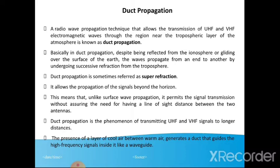Basically, in duct propagation, despite being reflected from the ionosphere or gliding over the surface of the earth, the waves propagate from one end to another by undergoing successive refraction from the troposphere. Duct propagation is sometimes referred to as superrefraction. It allows the propagation of signals beyond the horizon, meaning that unlike surface wave propagation, it permits signal transmission without the need for a line-of-sight distance between the two antennas.